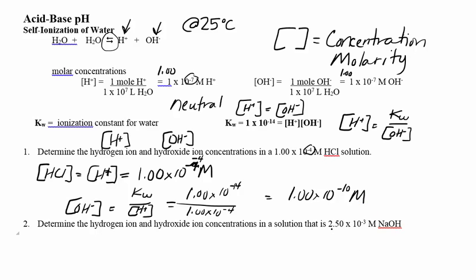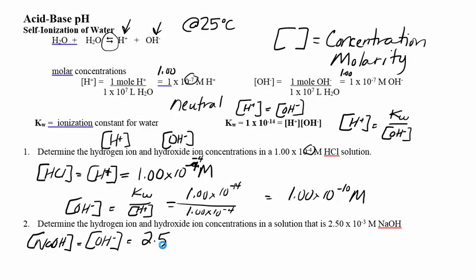For this next one, sodium hydroxide produces hydroxide. It's a strong base — you're only going to see strong bases. When you see the base, recognize it's producing the hydroxide, so there is one of your answers.